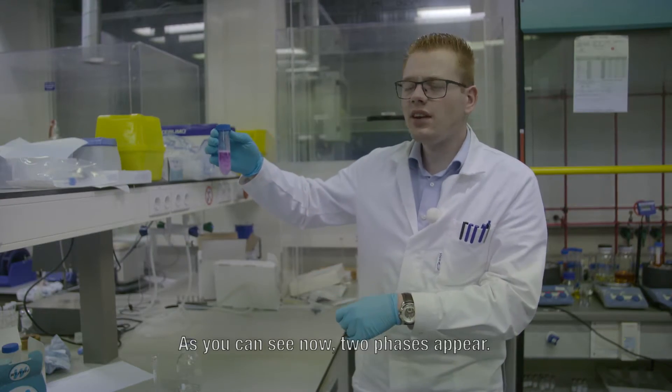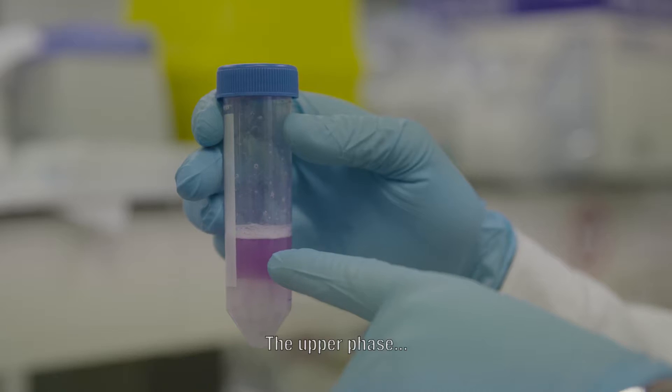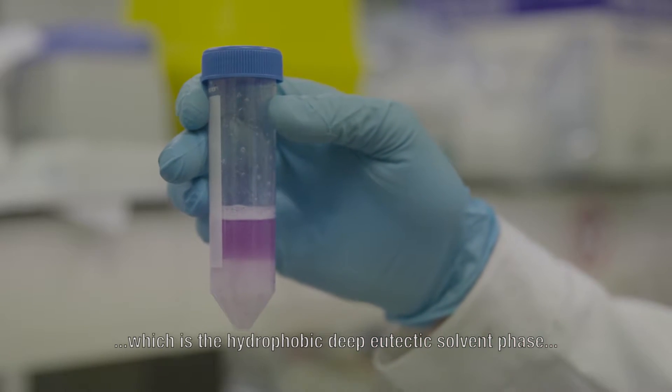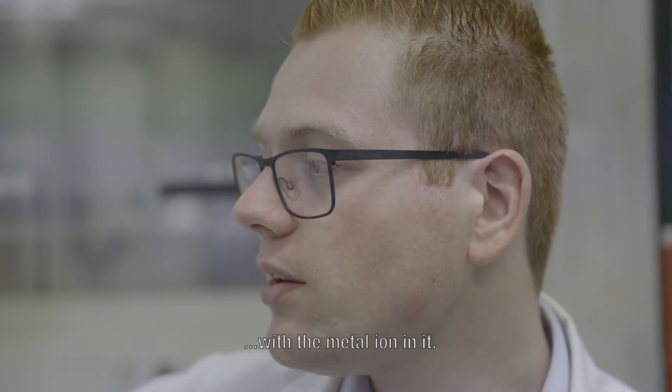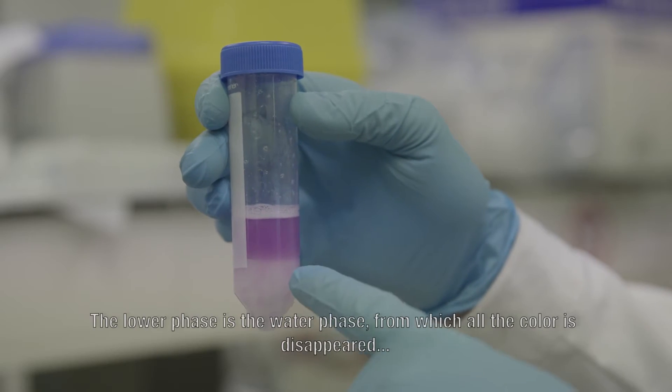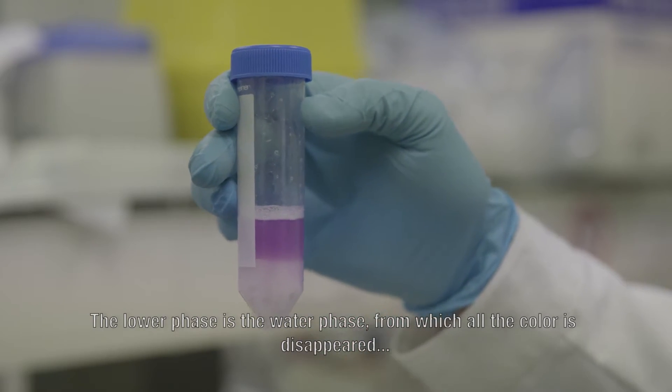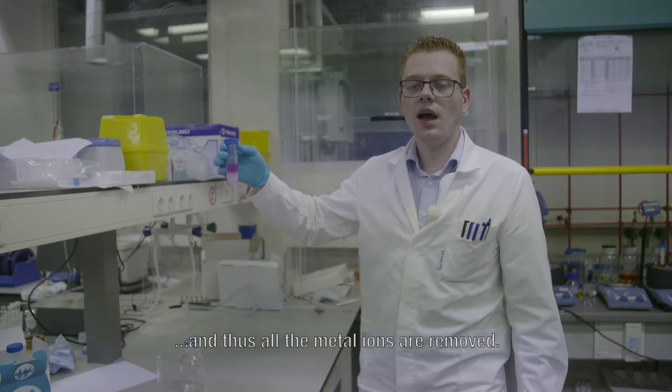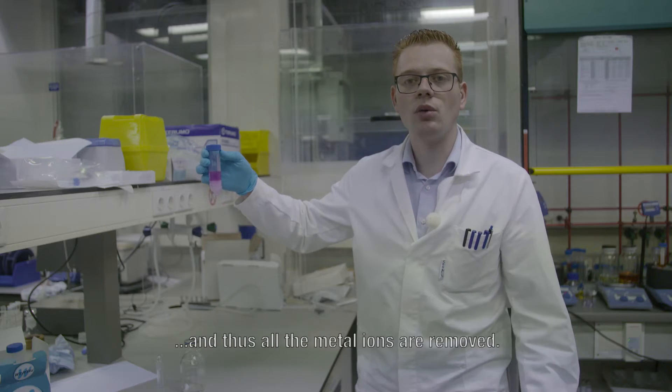As you can see, two phases now appear. The upper phase is the hydrophobic deep eutectic solvent phase with the metal ion in it. The lower phase is the water phase from which all the color has disappeared, and thus all the metal ions are removed.